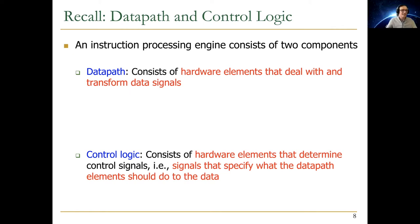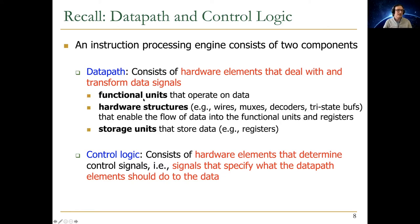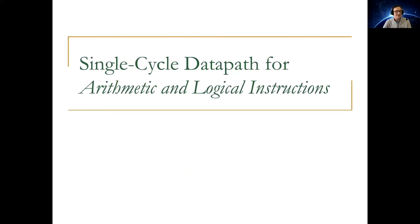This data path versus control distinction also exists in other domains like networking. The data path consists of hardware elements that deal with and transform data signals. Control logic consists of hardware elements that determine control signals — signals that specify what the data path elements should do to the data. The data path includes functional units, wires, muxes, decoders, tri-state buffers, and storage units like registers.